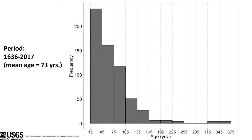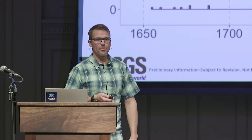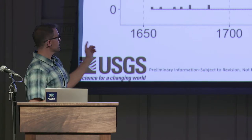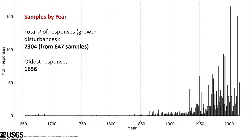Looking at the age of the trees, our mean age is about 73 years, and we had trees that extended as far back as 1636. So we had some pretty old trees, which potentially gives us a long chronology. Looking at samples by year, the total number of growth disturbances is just over 2,300, and they extend back at least into the mid-1650s. You'll notice quite a few signals here, and then some big gaps; as we get closer to current time, we have quite a few more samples.